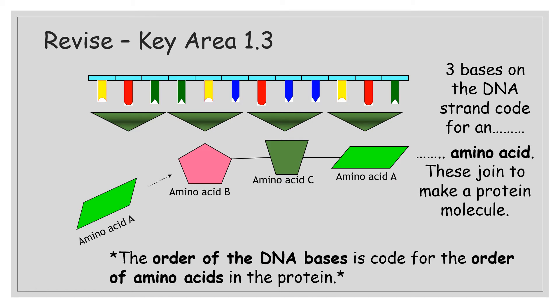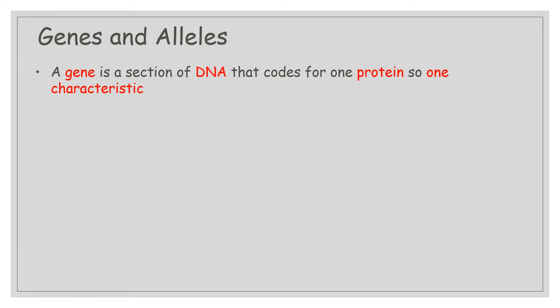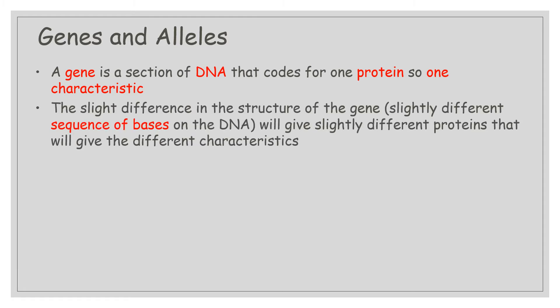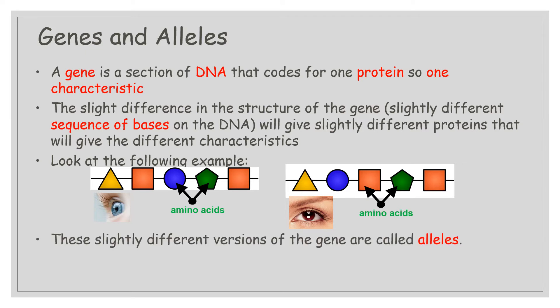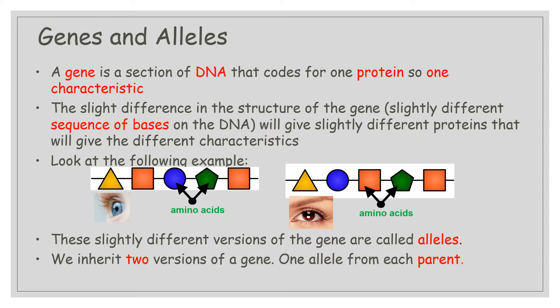These amino acids join to make a protein molecule, so the order of the DNA bases codes for the order of amino acids in the protein. A gene is a section of DNA that codes for one protein, so one characteristic. There are slight differences in the structure of the gene — slight differences in the sequence of bases on the DNA — giving different proteins and therefore different characteristics. For example, blue eyes and brown eyes have slightly different sequences of amino acids. Those slightly different versions of genes are called alleles, and we inherit two versions of a gene — one allele from each parent.